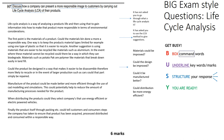Manufacture of the product could be made better and more efficient through the use of CAD modelling and simulations — this could help reduce the number of manufacturing processes needed. When distributing products, companies could select logistics partners that use energy-efficient or electric-powered vehicles.